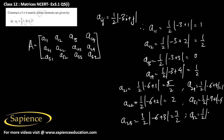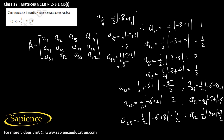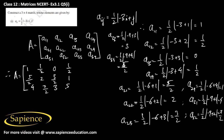a31 will be half of mod of minus 9 plus 1, giving 7/2. a32 will be half of mod of minus 9 plus 2, that is 7/2. a33 will be half of mod of minus 9 plus 3, which is 6 divided by 2, equaling 3. a34 will be half of mod of minus 9 plus 4, which equals 5/2. Therefore the matrix A is: [1, 1/2, 0, 1/2 | 5/2, 2, 3/2, 4 | 7/2, 3, 5/2].